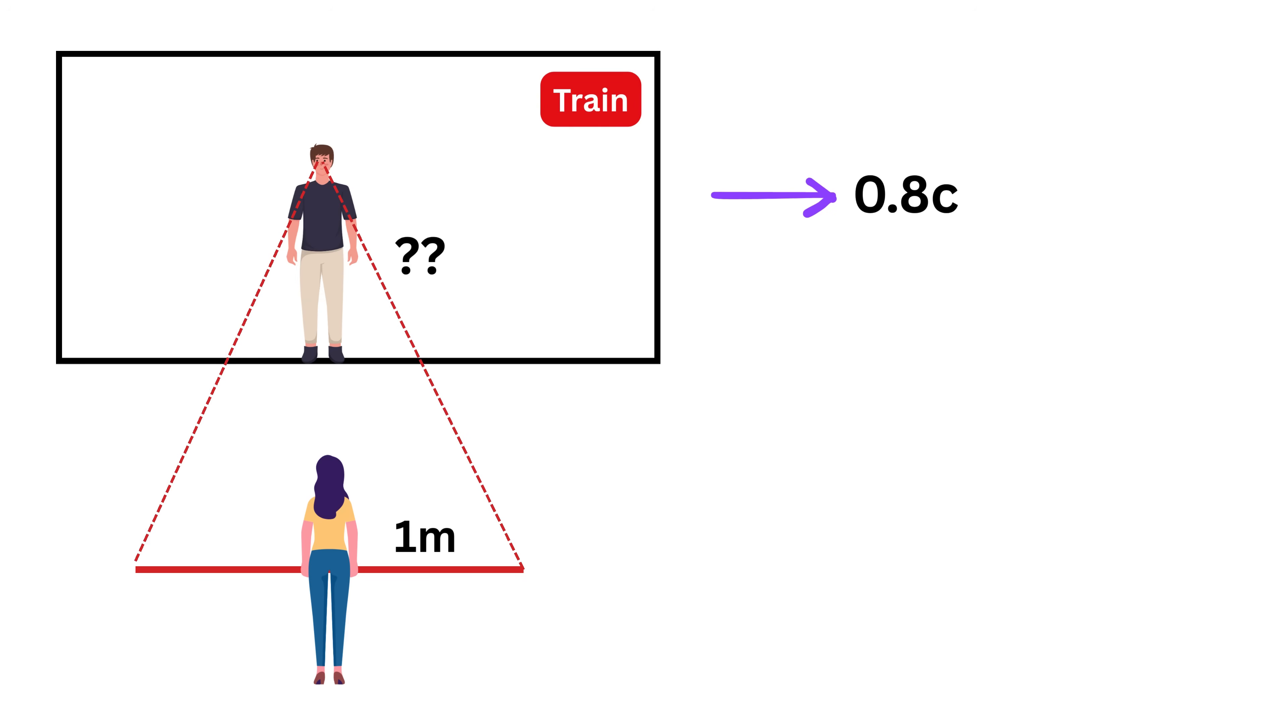Will it still be one meter or something else? It will be less than one meter because from Bob's moving frame, the pole is now in motion and therefore appears contracted. And the length turns out to be the same as one divided by gamma, or 0.6 meters.